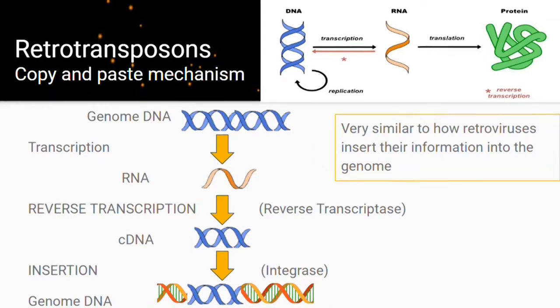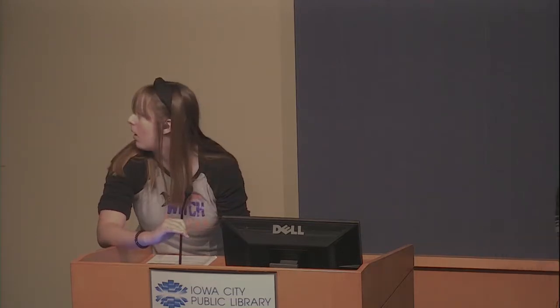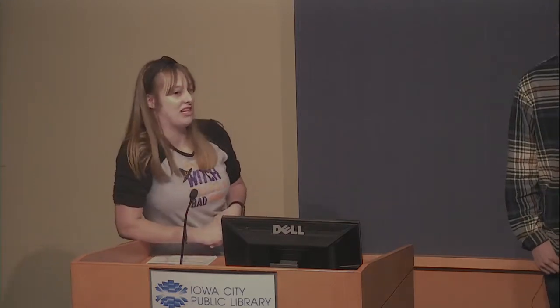Retroviruses use a similar mechanism to retrotransposons to insert their DNA. The most well-known retrovirus is HIV. HIV is an infectious disease, and once you have it, it's very hard to get rid of because it inserts itself inside your genome. Therefore, it can be passed to offspring, and you can pass it to other people because it is permanently inside you.